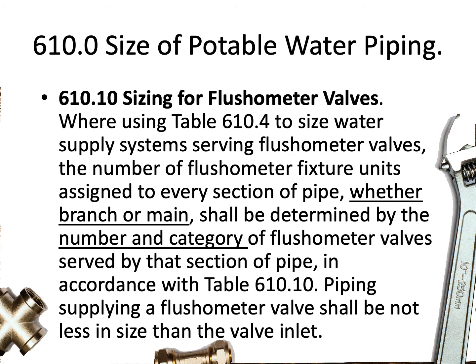Starting in Section 610.10, Sizing for Flushometer Valves. We're using Table 610.4 to size water supply systems serving flushometer valves. The number of flushometer fixture units assigned to every section of pipe, whether branch or main, shall be determined by the number and category of flushometer valves served by that section of pipe, in accordance with Table 610.10. Piping supplying a flushometer valve shall be not less in size than the valve inlet.